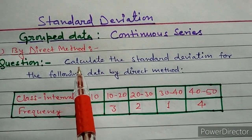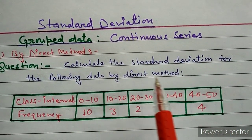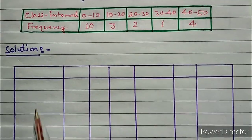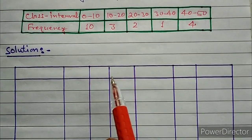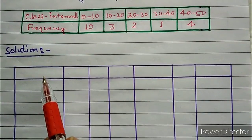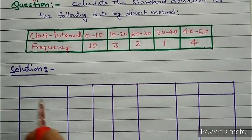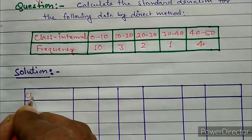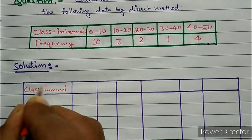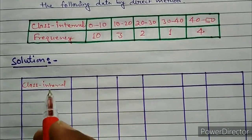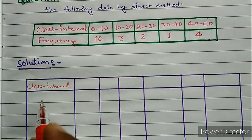The question is: calculate the standard deviation for the following data by direct method. To solve this question, first of all we have to draw a table having 7 columns. In the first column we will write the class interval and we note the class interval into this column.